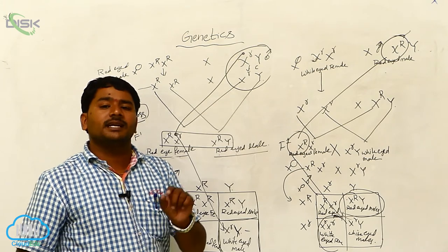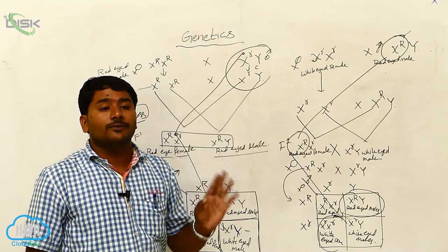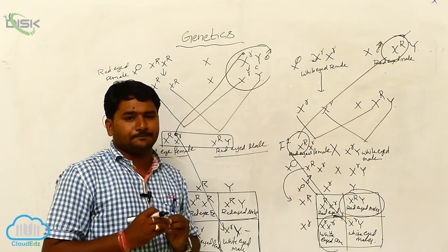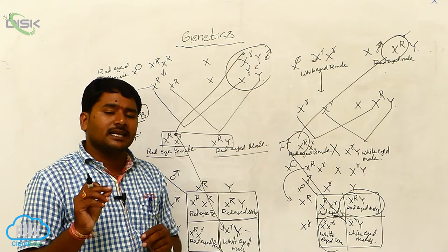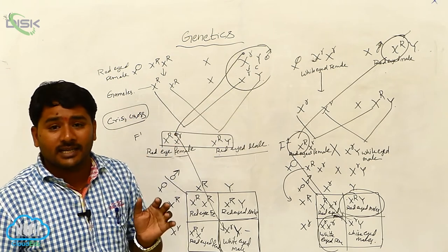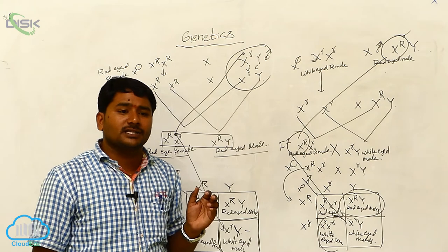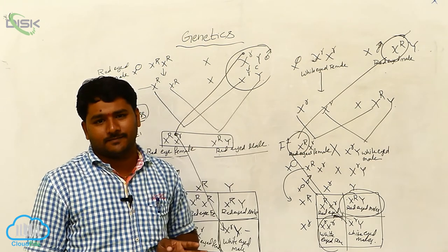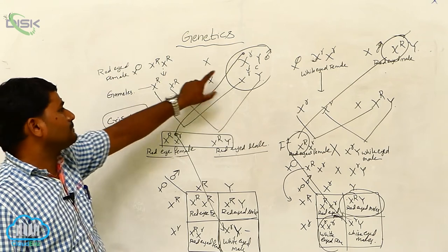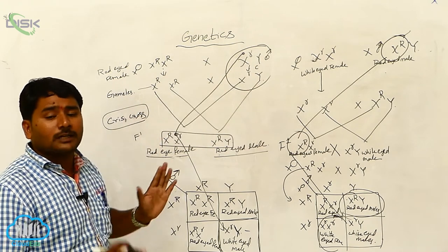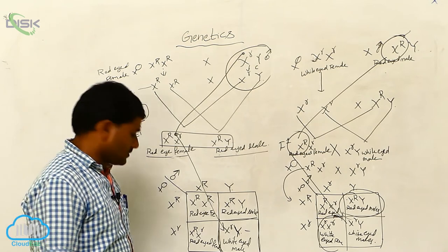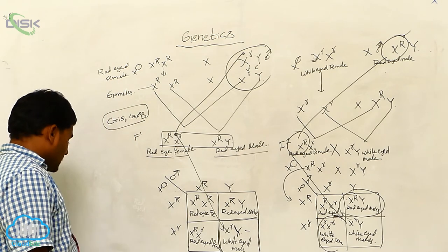What is the definition of sex-linked inheritance? The inheritance of a character decided by a gene which is located on one of the X chromosomes. Morgan selected the study of eye color of Drosophila. In Drosophila, eye color is determined by a gene located on the X chromosome, so it is not present on the Y chromosome. A sex-linked character means that character-determining gene is located on one of the two sex chromosomes and is absent on the other sex chromosome. This pattern is called crisscross inheritance.